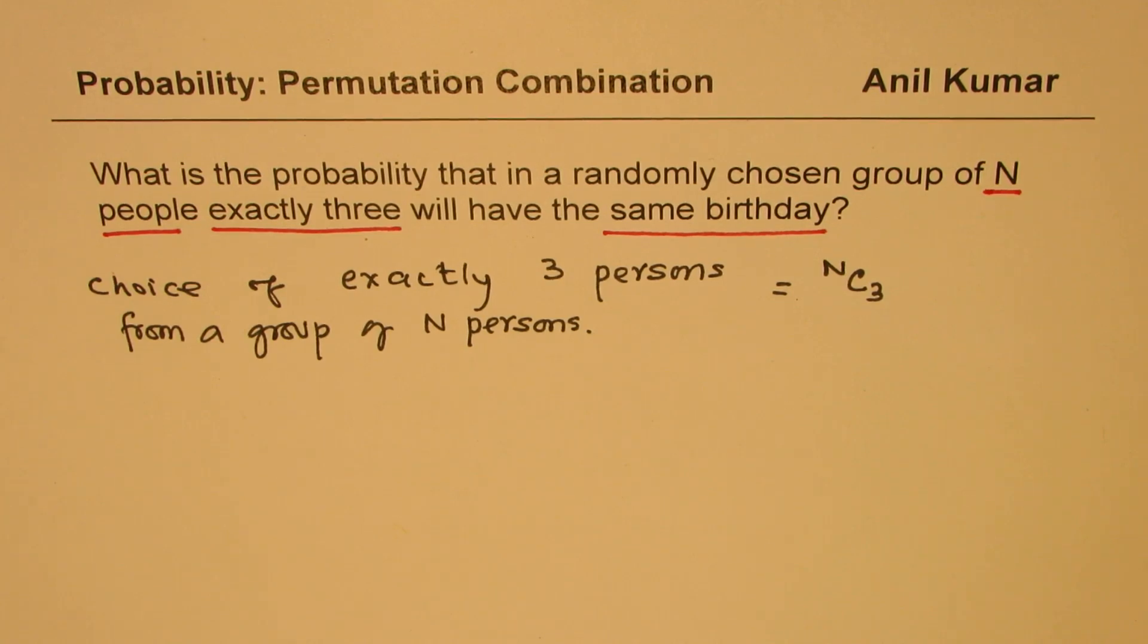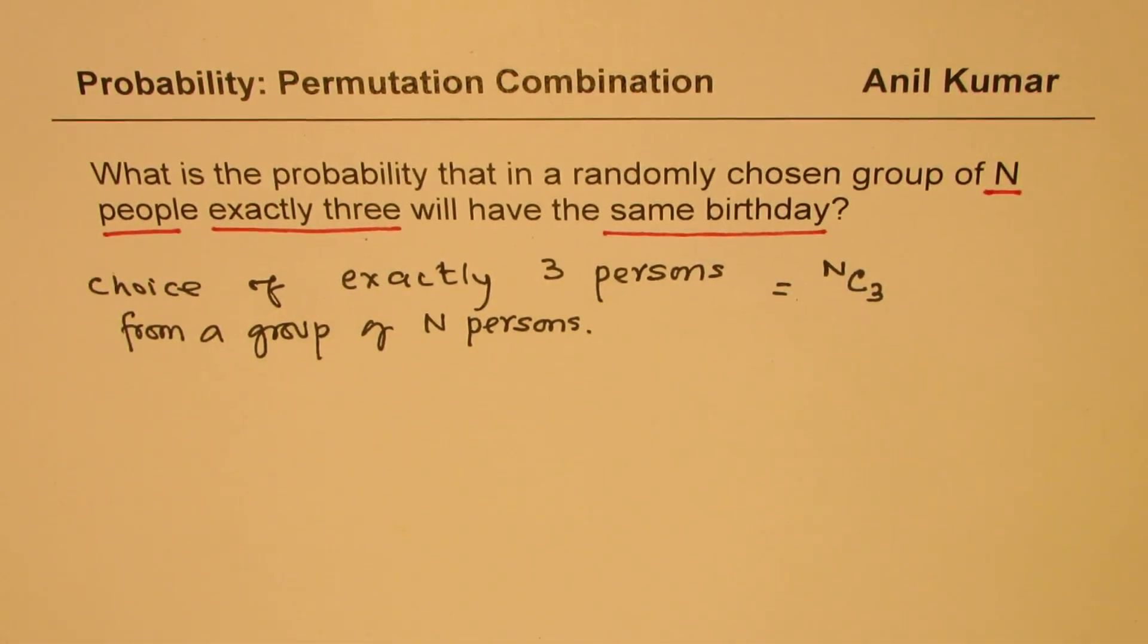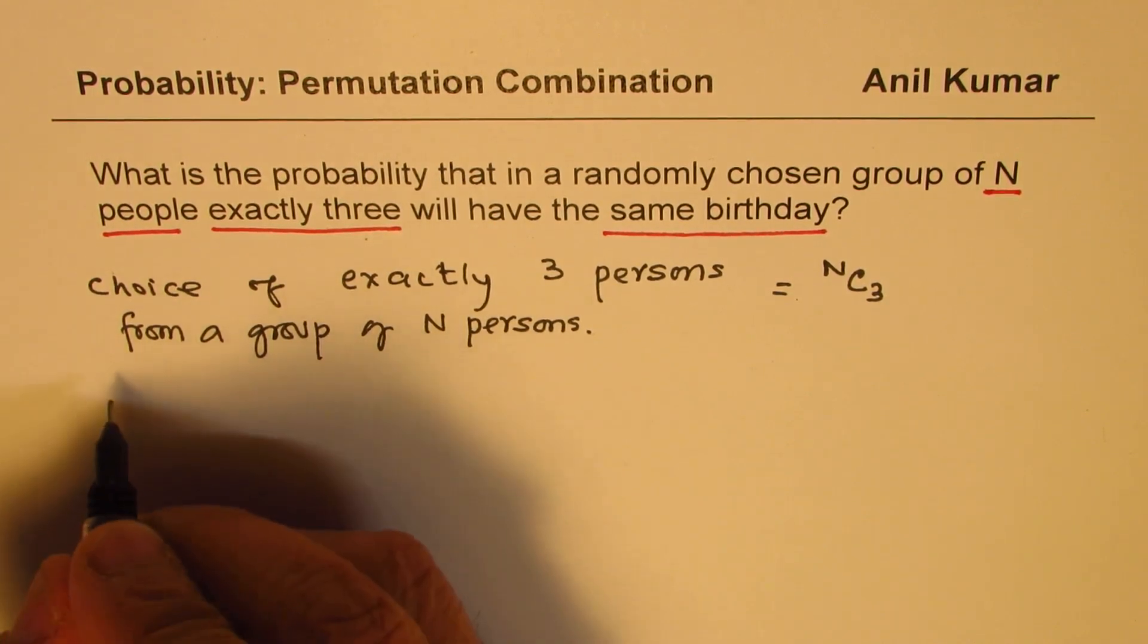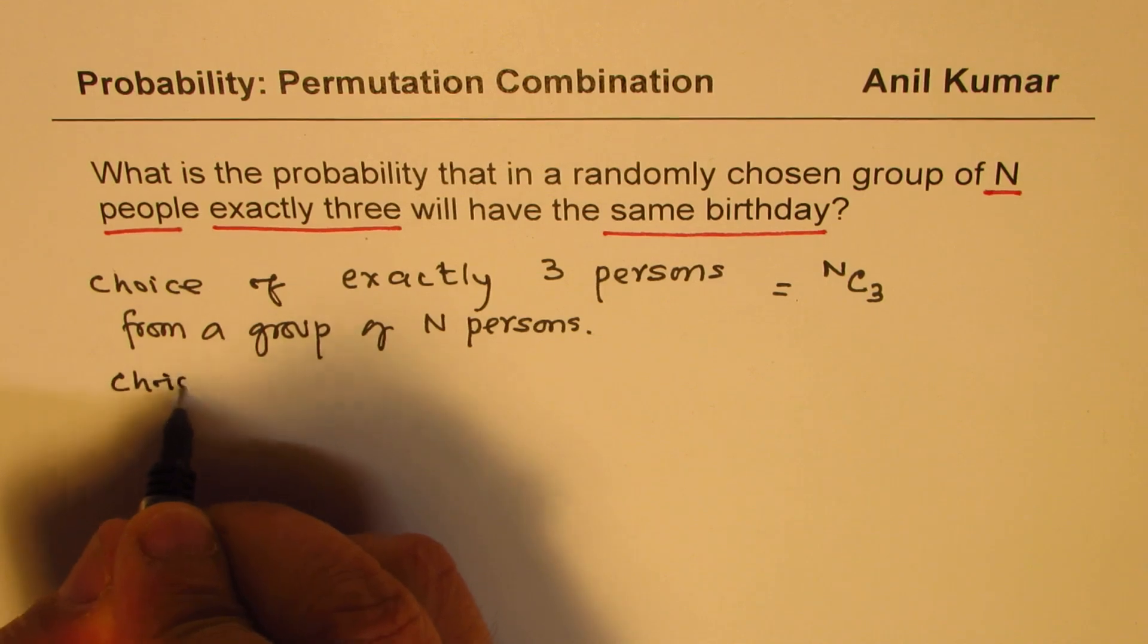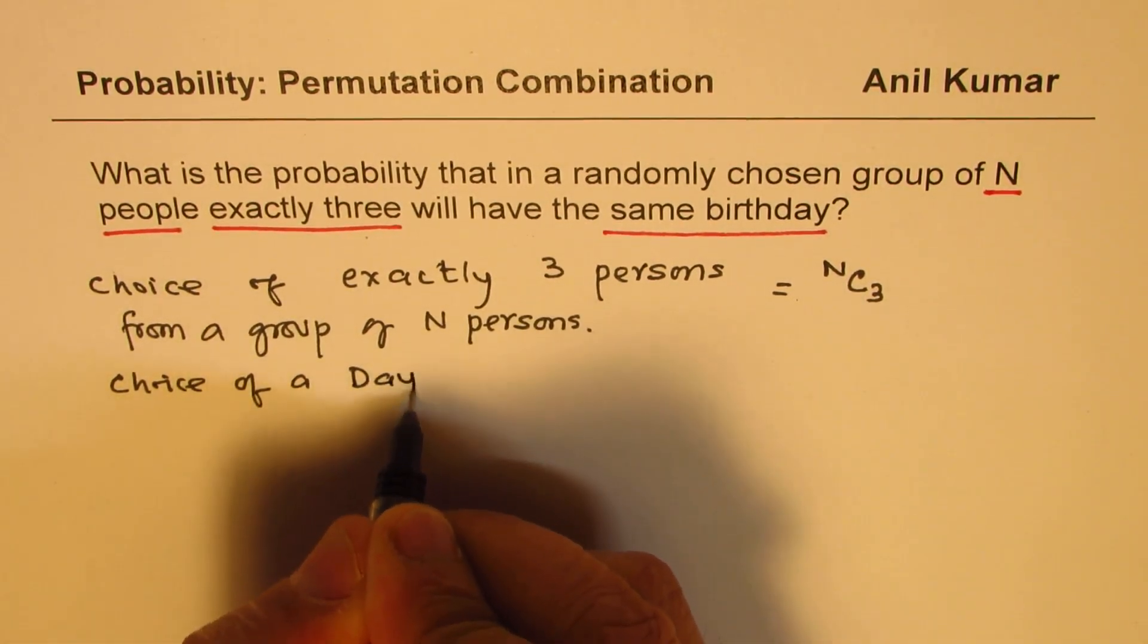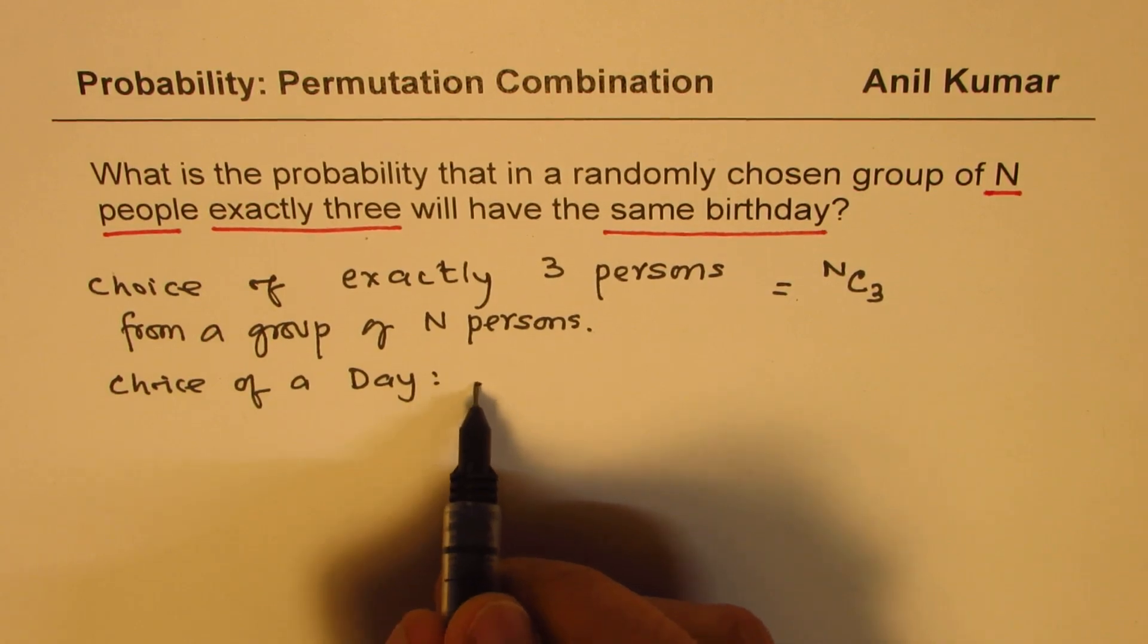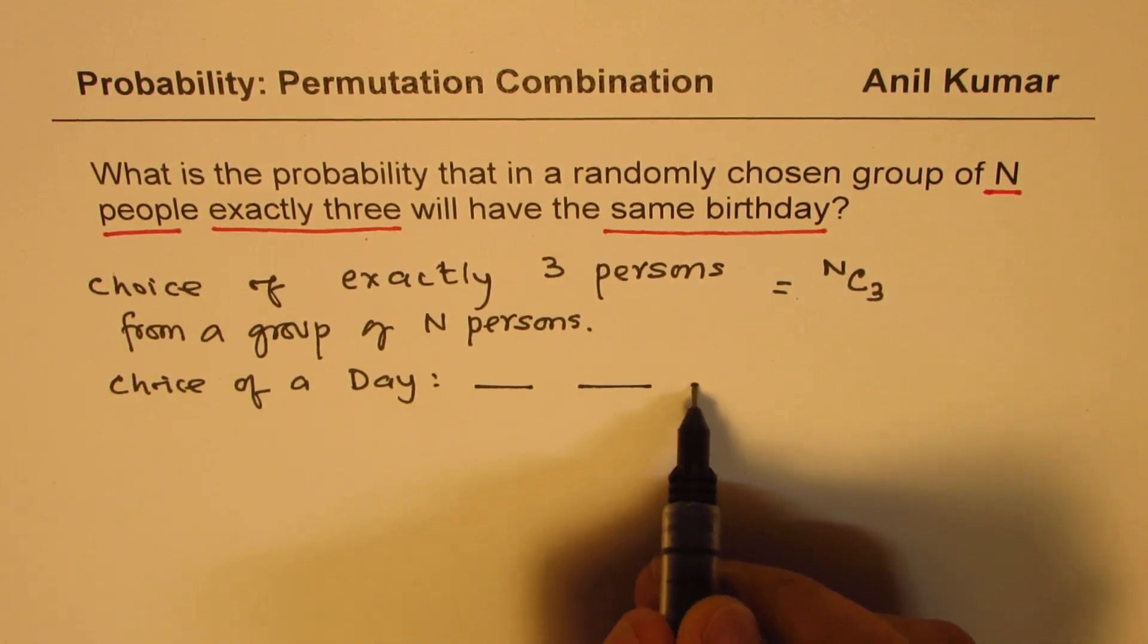Now, we need to choose the probability of their having the same birthday. So now, we say which days can they be chosen from. So now, we have to choose a day. In all, there are 365 days. So talking about probability, in all, there are 365 days.